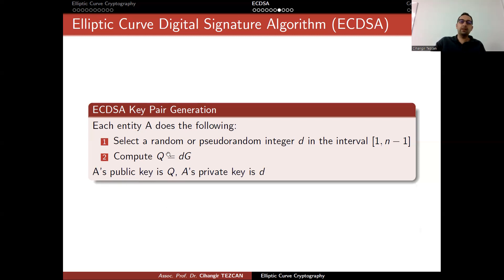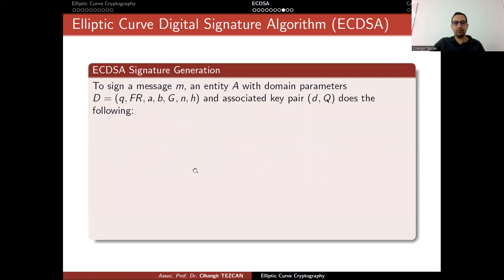You might ask that if I know the q, the point, which is your public key, and g is the base point, now I need to capture d. Is this problem easy? Actually, this is the discrete logarithm problem for elliptic curves.